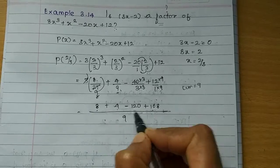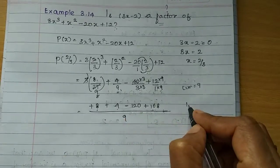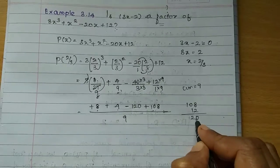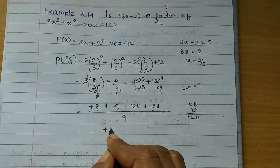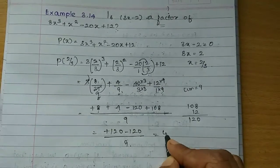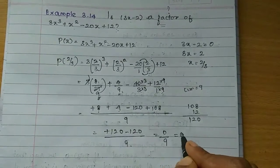Now 8 plus 4 plus 108. These are all plus symbols. 8 plus 4 is 12 in the numerator, which equals 120. Then plus 120 minus 120 divided by 9, which is equal to 0 by 9, which is equal to 0.